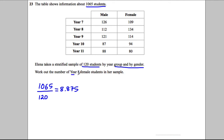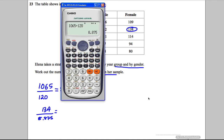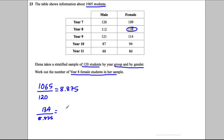We're going to focus on year eight female students. There are 134 year eight females, so we do 134 divided by 8.875, which equals 15.09. Rounding to the nearest whole number gives us 15 students — so there are 15 female students in year eight in the sample.